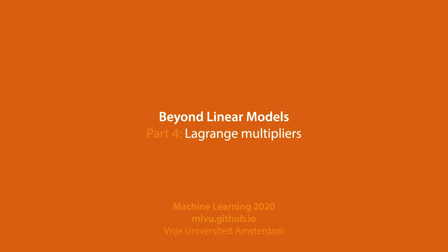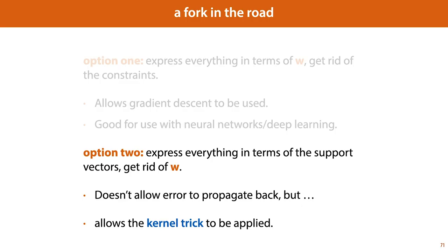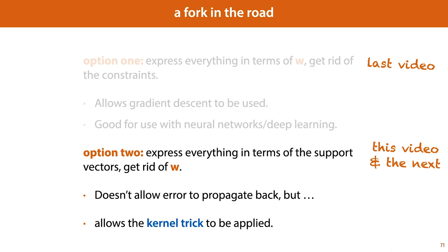In the last video, we noted that there are two ways to deal with the maximum margin hyperplane objective. The second of these is to express everything in terms of the support vectors and to get rid of the actual parameters of the hyperplane. Unlike the first option, this requires us to keep the constraints of the problem, so we need to look beyond plain gradient descent at constrained optimization. We'll look at one form of constrained optimization in this video — the use of Lagrange multipliers — and then in the next video we'll return to our maximum margin hyperplane objective and see what this second option looks like.